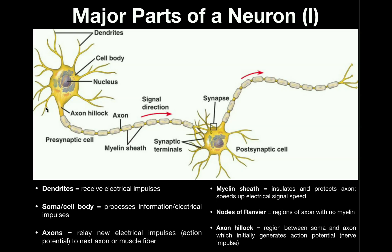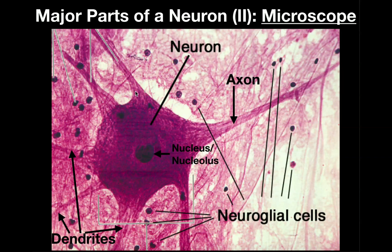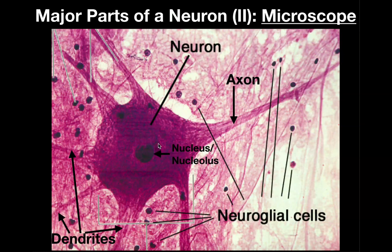Those are the major parts of neurons in the artist's rendition, but we can also look at this under a microscope. In the micrograph, this is going to be the cell body — the soma. This large dark spot that you'll see in the cell body is really where the nucleus is. The dark staining part is technically the nucleolus, but this whole region is going to be the nucleus.